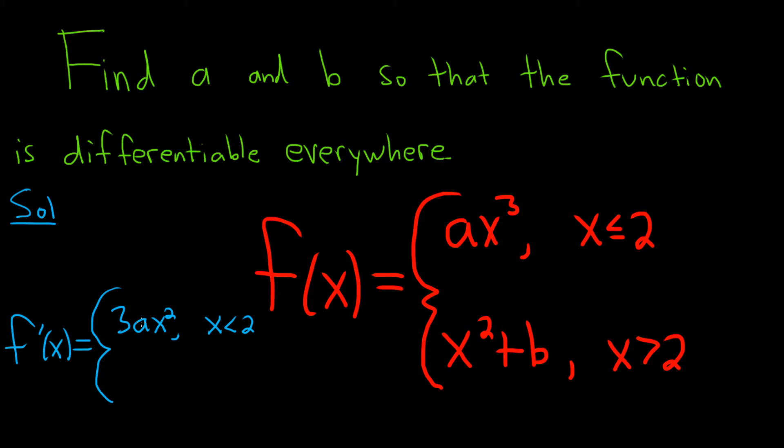And then here we're simply going to get 2x. And this is for x greater than 2. B is a constant, so its derivative is 0.